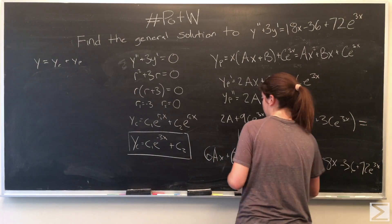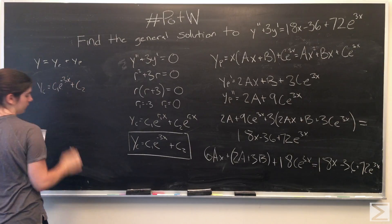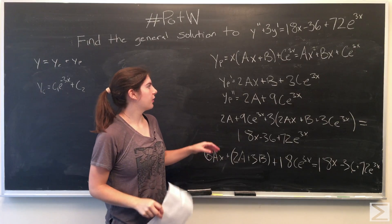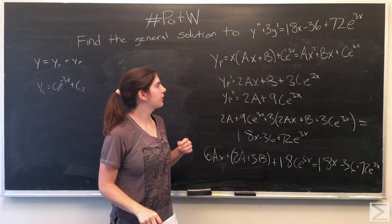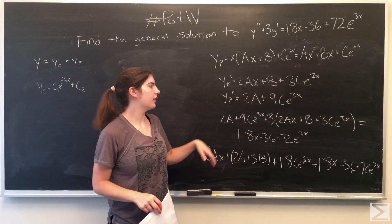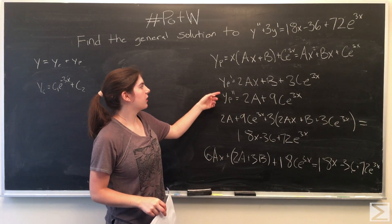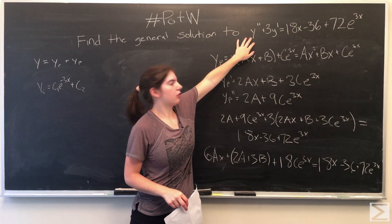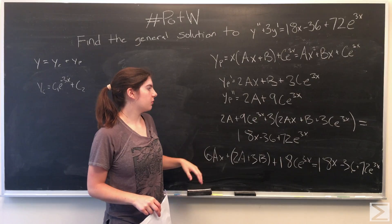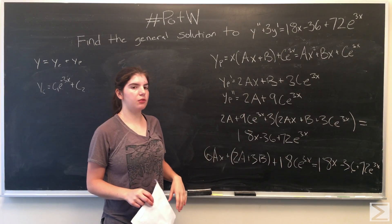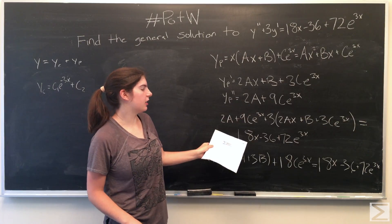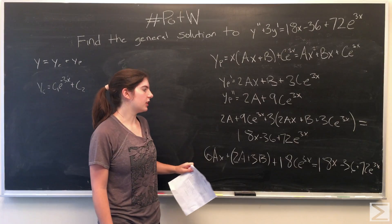So we're going to take the first derivative of the particular solution. Our first derivative is 2ax plus b plus 3ce to the 3x, and then our second derivative is 2a plus 9ce to the 3x. And once we substitute these into our original equation, we get 2a plus 9ce to the 3x plus 3 times the quantity 2ax plus b plus 3ce to the 3x, which all equals 18x minus 36 plus 72e to the 3x.